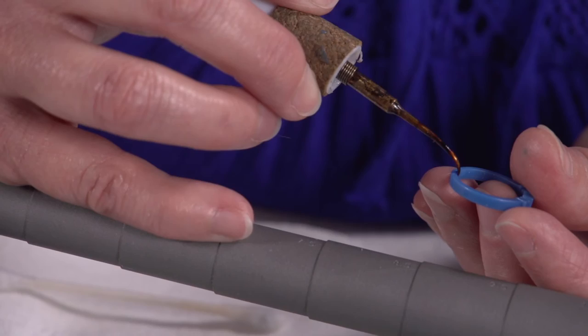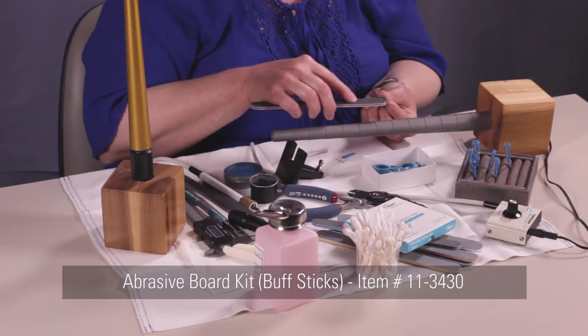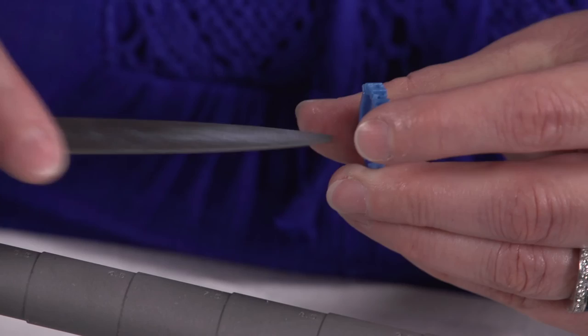All right. Now I'm going to go to this. It's one of the little buff sticks. You can use them on metal, you can use them on wax. All right. Let me go back to my inside, make sure that's out.